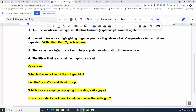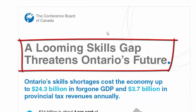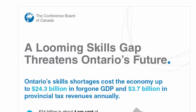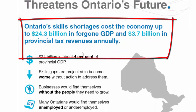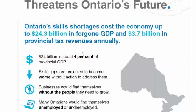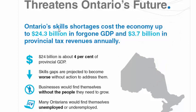There may be a legend or a key to help you explain the information in the selection. In this case, there isn't a legend, but the title tells you the main idea. The title says: 'A Looming Skills Gap Threatens Ontario's Future.' Underneath it, the main idea is expanded upon: Ontario's skills shortages cost the economy up to $24.3 billion in foregone GDP and $3.7 billion in provincial tax revenues annually. Even if you don't know what foregone GDP means, you can still understand that Ontario's economy is set to lose lots of money because of the skills gap.